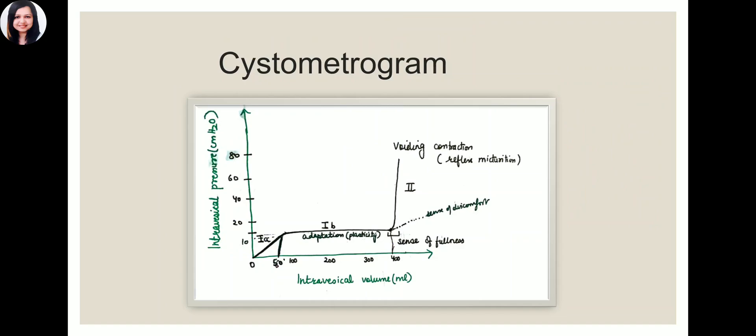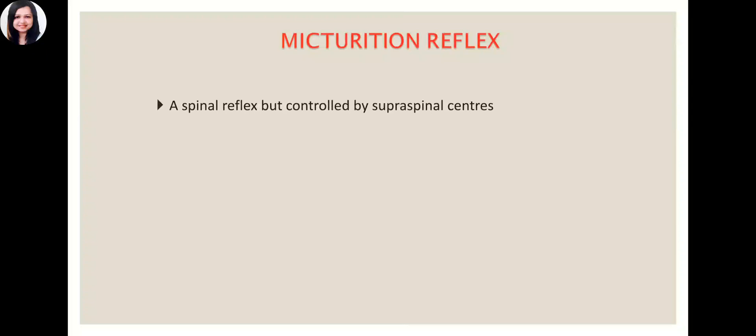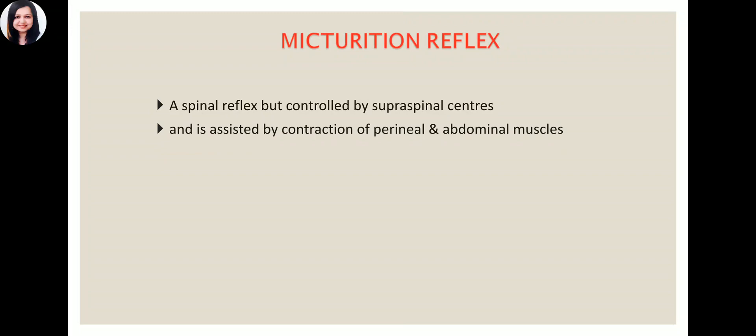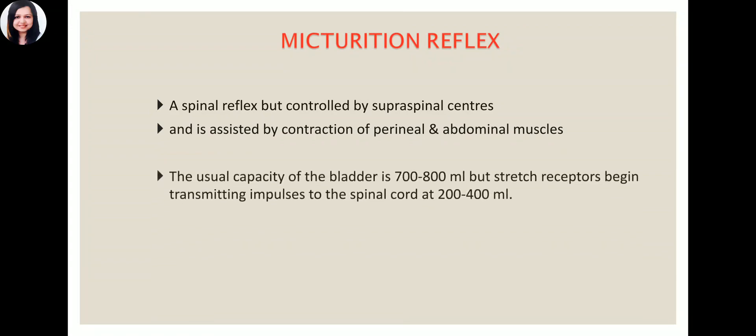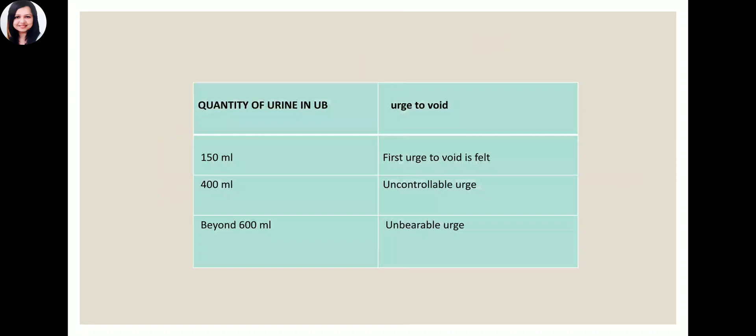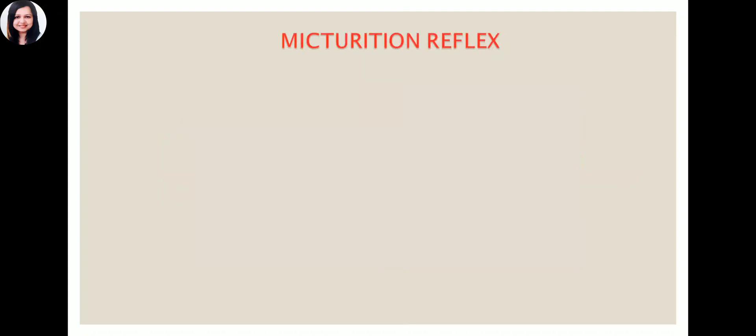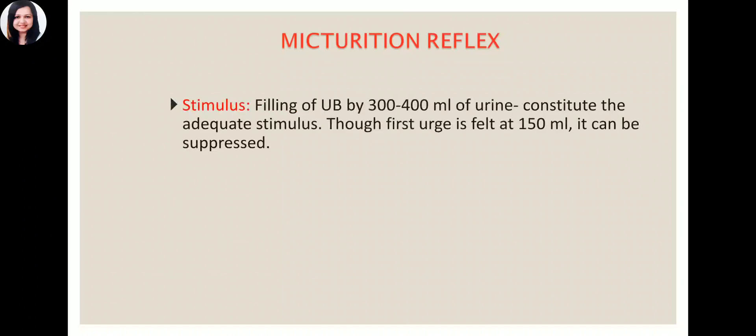The micturition reflex is triggered beyond 400 ml. The micturition reflex is a spinal reflex but is also controlled by supraspinal centers, which is why we can control urination at will. It is assisted by contraction of perineal and abdominal muscles. Stretch receptors begin transmitting impulses at 200 to 400 ml. The first urge is felt at 150 ml; at 400 ml the urge becomes uncontrollable; beyond 600 ml it is an unbearable urge. Filling of 300 to 400 ml is the adequate stimulus, even though the first urge at 150 ml can be ignored.